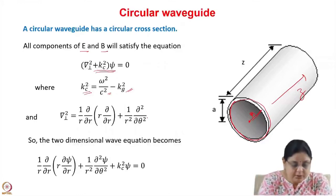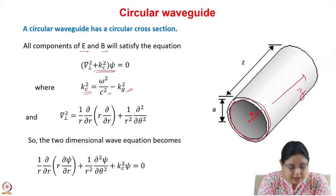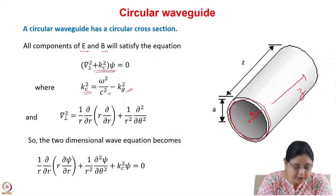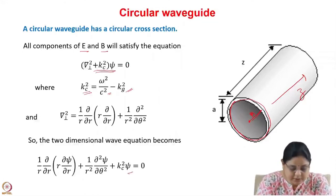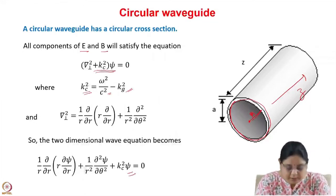Since this is a circular waveguide, we will solve this in cylindrical coordinates. In cylindrical coordinates, del perpendicular squared can be written as 1/r del/del r of r del/del r plus 1/r squared del squared by del theta squared. This two-dimensional wave equation is in r and theta.